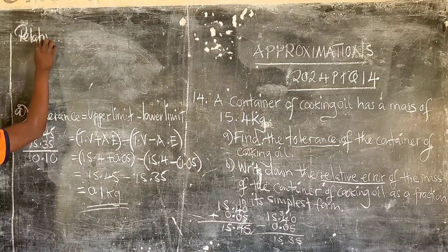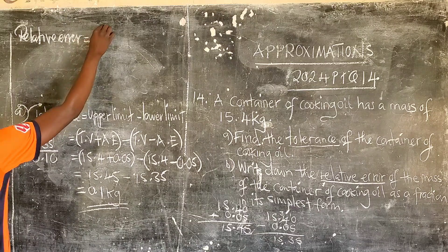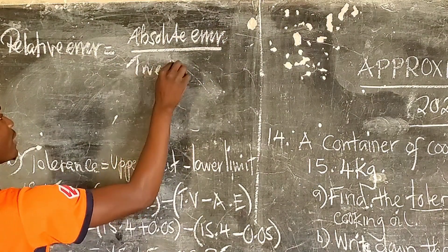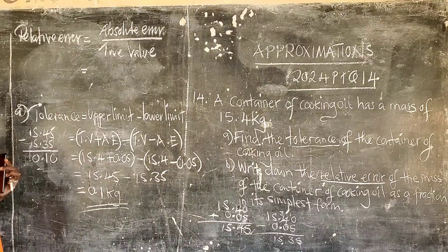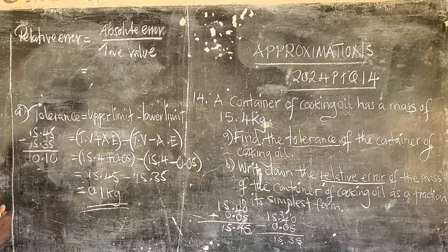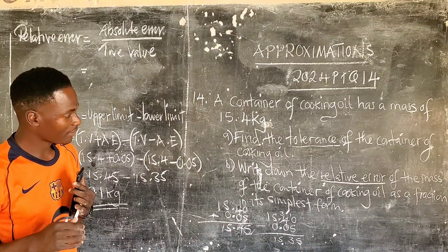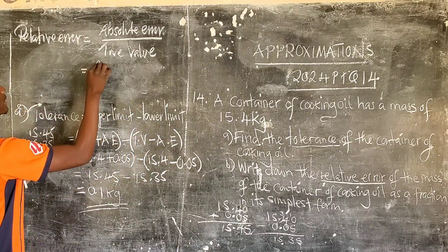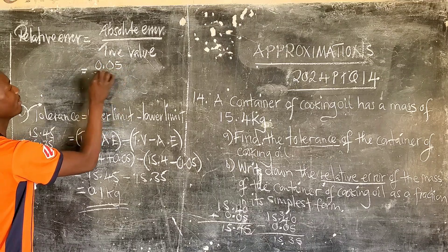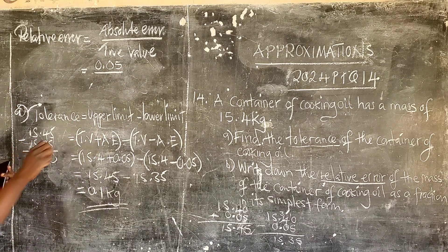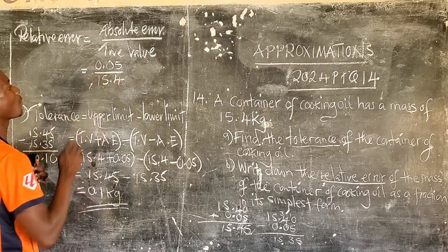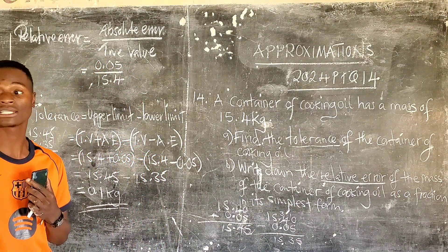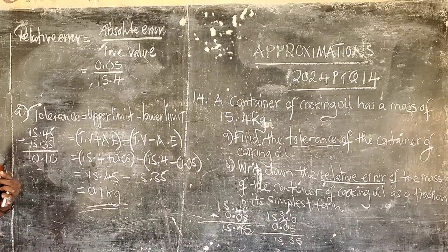Now let's find the relative error. The relative error is equal to absolute error over true value. We are asked to leave the answer as a fraction in its simplest form. The absolute error of 15.4 is 0.05, and the true value is 15.4.